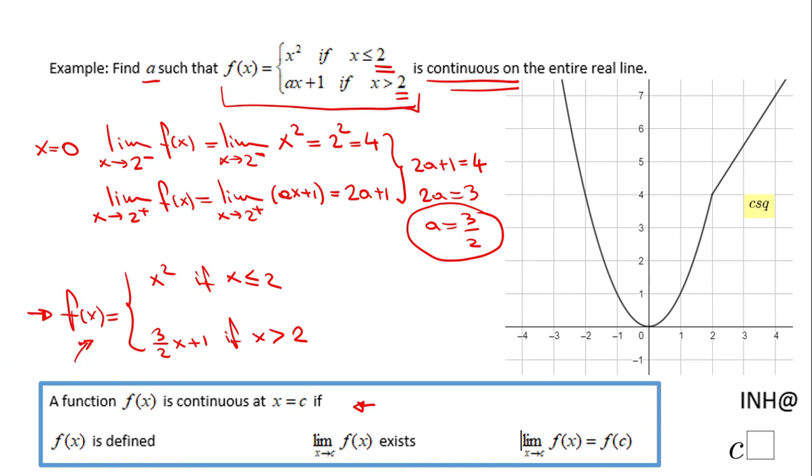The function is continuous at x equals 2. If you enjoyed this video, please don't forget to click the like button and come back to C Squared for more help. Thank you.